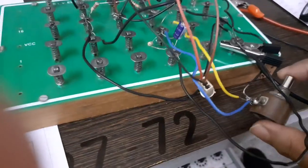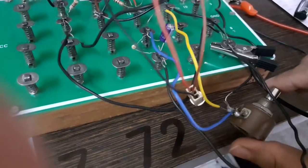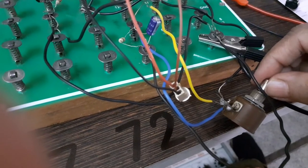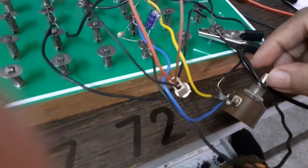And then we have connected a pot which is of 1k. So the pot is varying the voltage. You can vary the waveform with this pot.